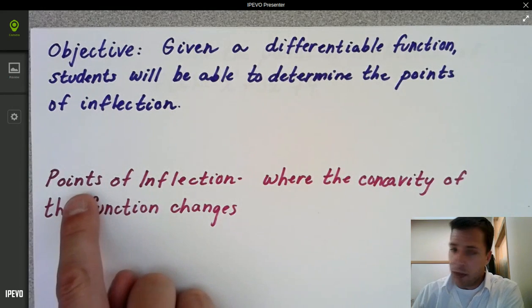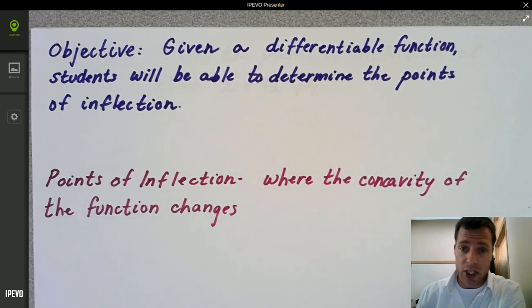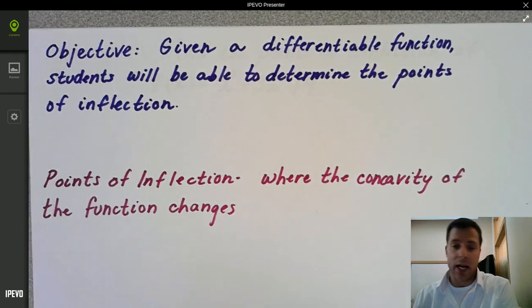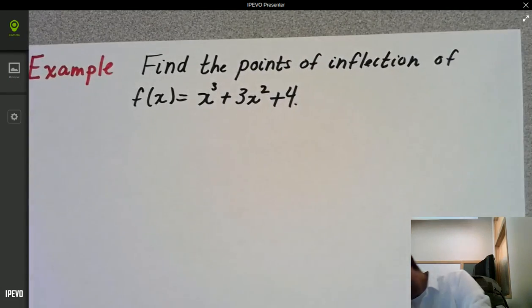And the idea here, the point of inflection or a point of inflection is where the concavity of the function changes, meaning going from that U-shaped concave up to concave down and vice versa. So I've got one example I want to show you, and here it is.